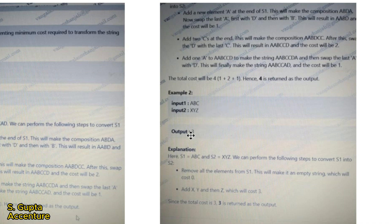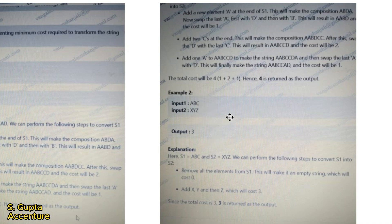For ABC and XYZ, the output is 3 because nothing is matching between the two strings. What we do is delete each and every character from string 1 and add all the characters of string 2. So total 3 additions are happening here, and that's why the total cost is 3.